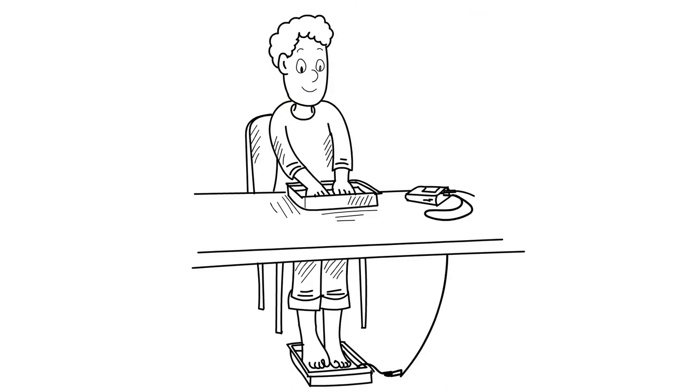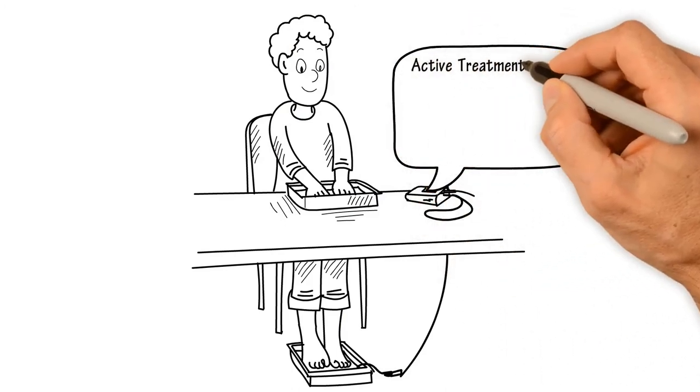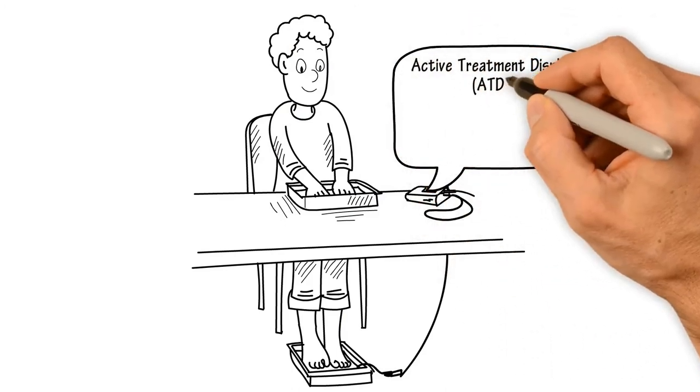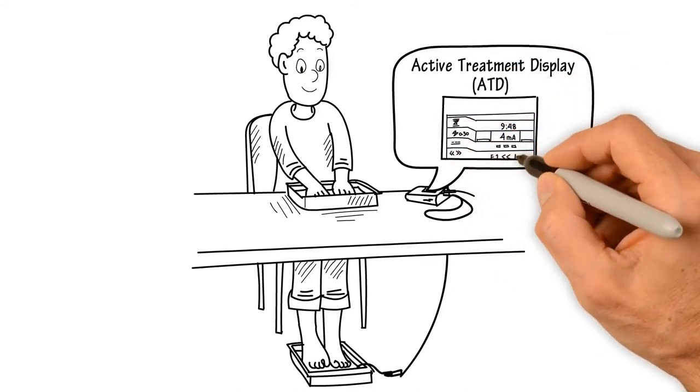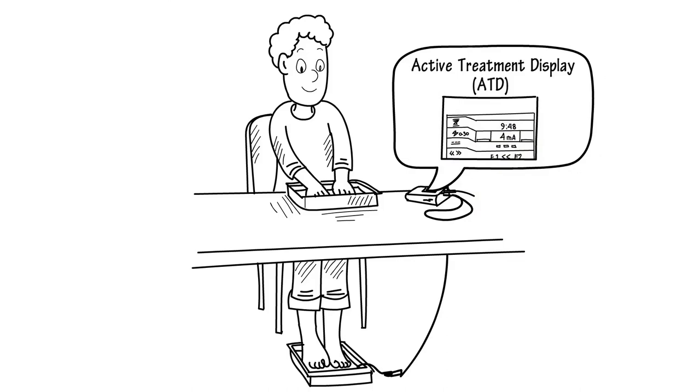Step 13: On the main control unit, you'll notice the active treatment display (ATD) light up with two bars. These display in real time that the treatment is working and when you've reached the preset power level.